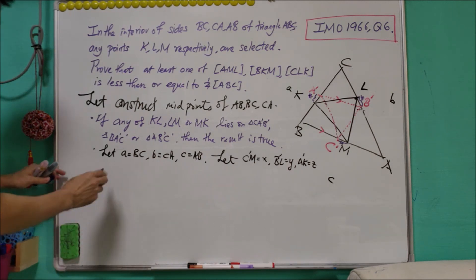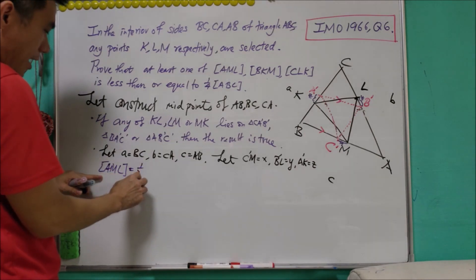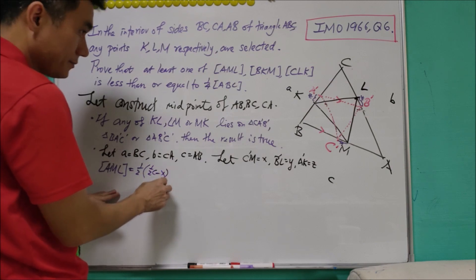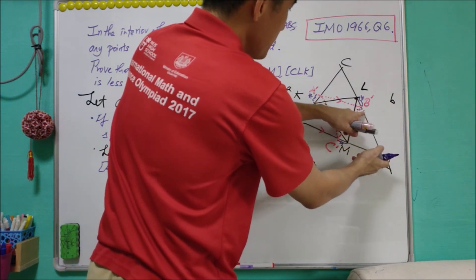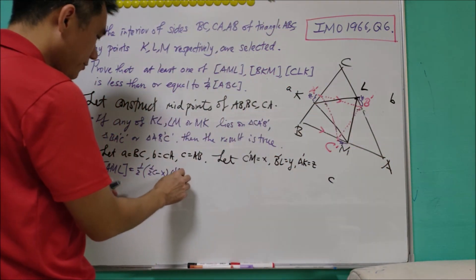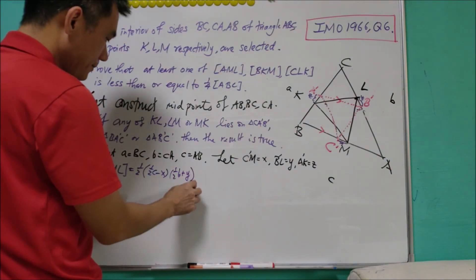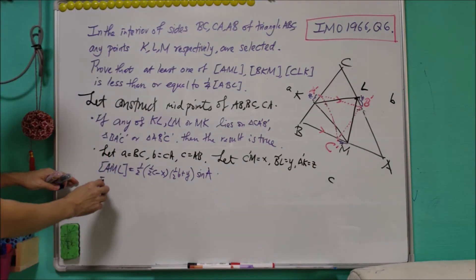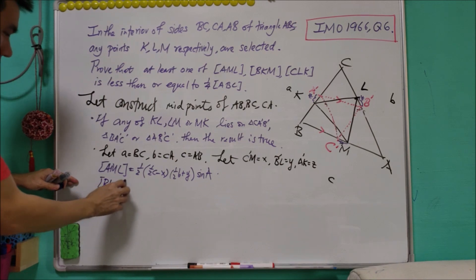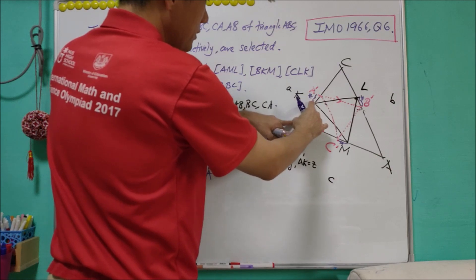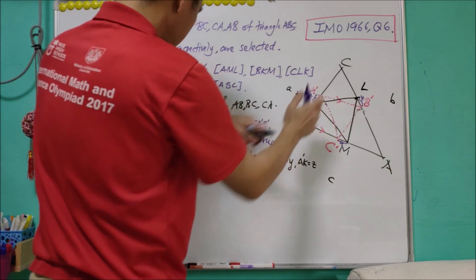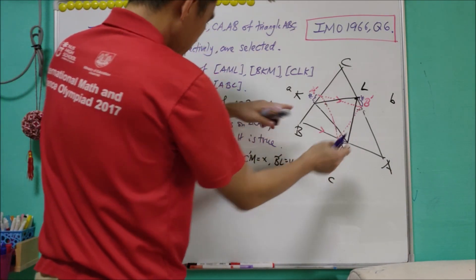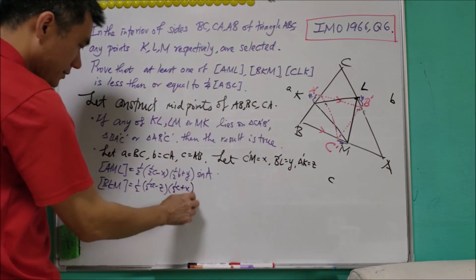The area of triangle AML equals one half times AM times AL times sine A. AM equals one half of c minus x, and AL equals one half of b plus y, giving area s1 = one half times (c minus x)/2 times (b plus y)/2 times sine A. For the area of triangle BKM, s2 = one half times (b minus z)/2 times (c plus x)/2 times sine B.